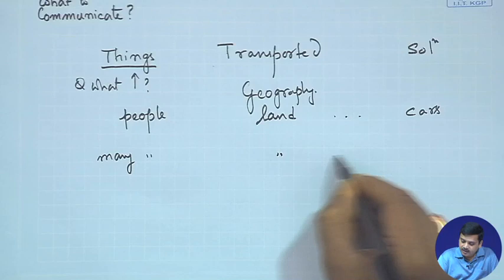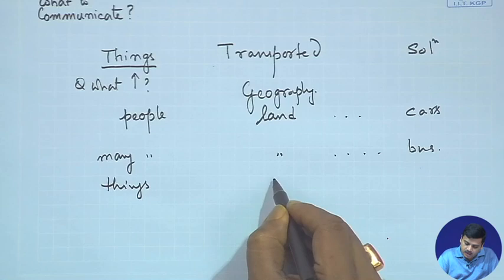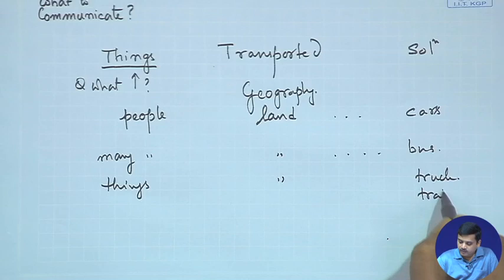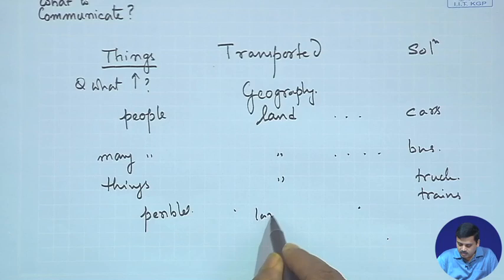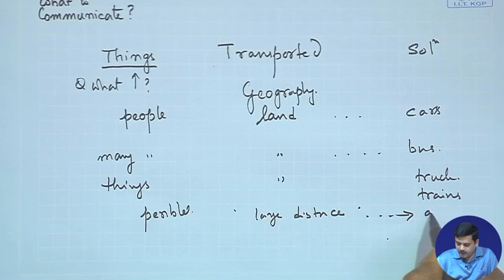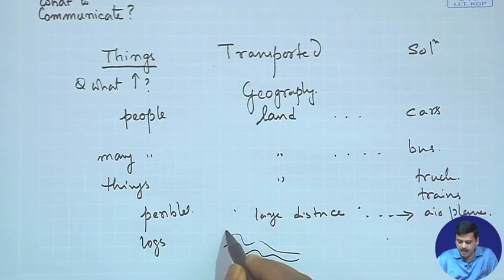We could move to say we want to transport things over land, so we could think of a truck or a goods train. We could think of things which are perishable over large distances — then we could think of airplanes. For logs of wood, if there is a river connecting the two lands, we could say let them simply float.